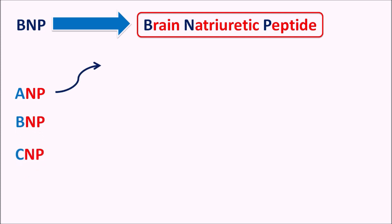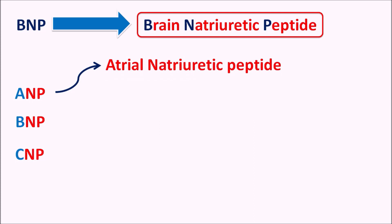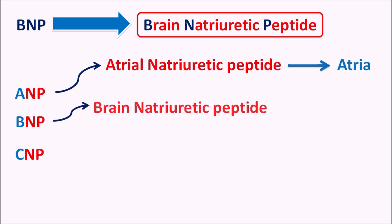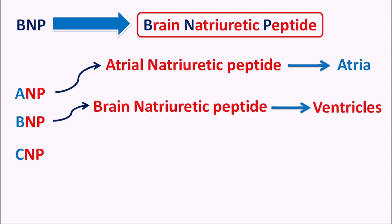ANP is also called atrial natriuretic peptide. This peptide is mainly released from the atria, that's why it is called ANP. BNP is the brain natriuretic peptide, also called B-type natriuretic peptide. This peptide is released mainly from the ventricles but also from the atria as well as the brain. It is mainly released from the ventricles due to overstretching of ventricular walls, particularly associated with congestive heart failure.